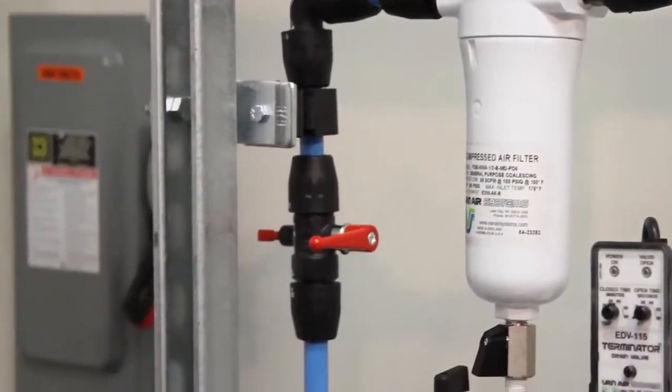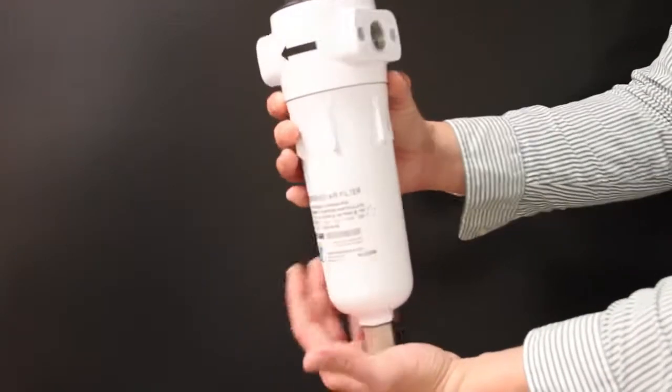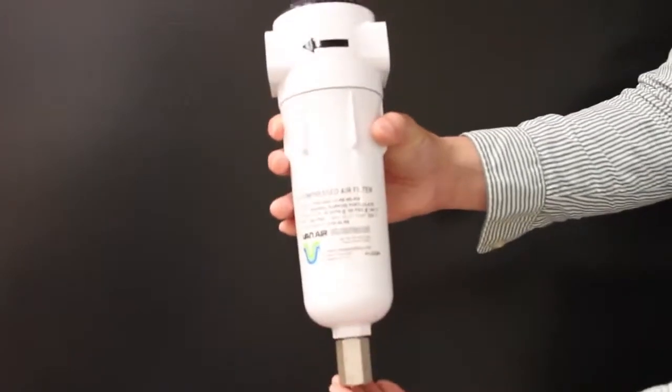If you have a filter on hand and want to change it from coalescing to particulate or vice versa, all you need to do is rotate the head and change the arrows to the opposite direction.